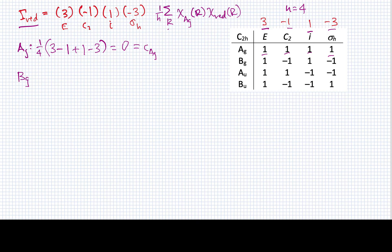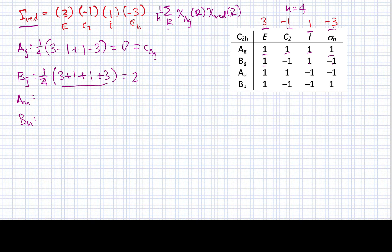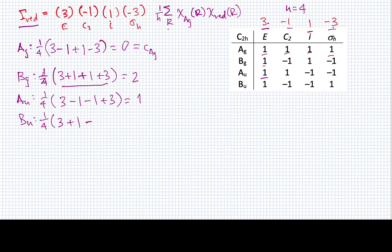I can do this for each irreducible representation. For Bg: 1/4 of (3 + 1 + 1 + 3) = 1/4 of 8 = 2. For Au: 1/4 of (3 − 1 − 1 + 3) = 4/4 = 1. For Bu: 1/4 of (3 + 1 − 1 − 3) = 0.